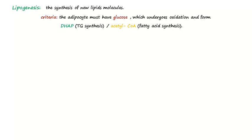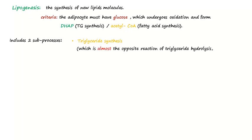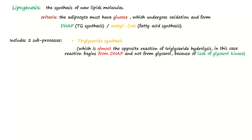Lipogenesis includes two processes. The first is triglyceride synthesis, which is almost the opposite reaction to triglyceride hydrolysis. But in this case the reaction starts from dihydroxyacetone-phosphate and not from glycerol, because the adipose tissue lacks the glycerol-kinase enzyme.